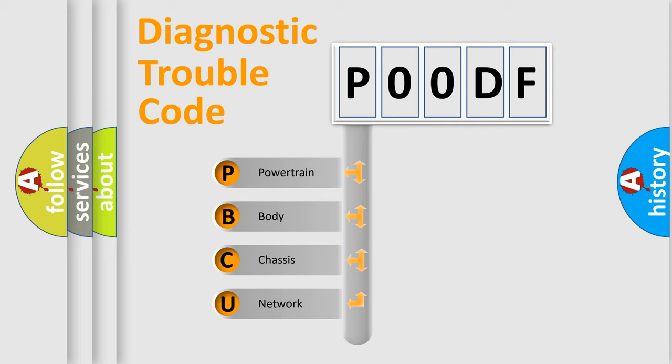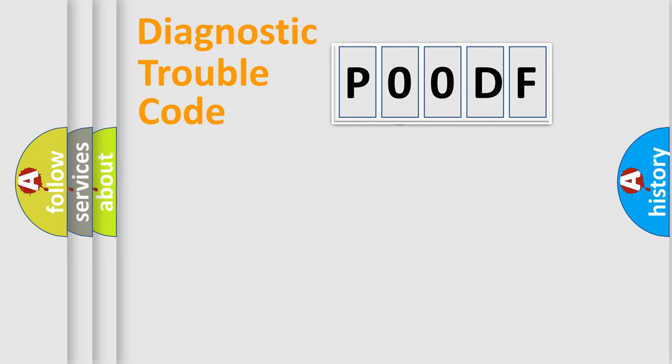We divide the electric system of automobile into four basic units: Powertrain, Body, Chassis, and Network. This distribution is defined in the first character code.